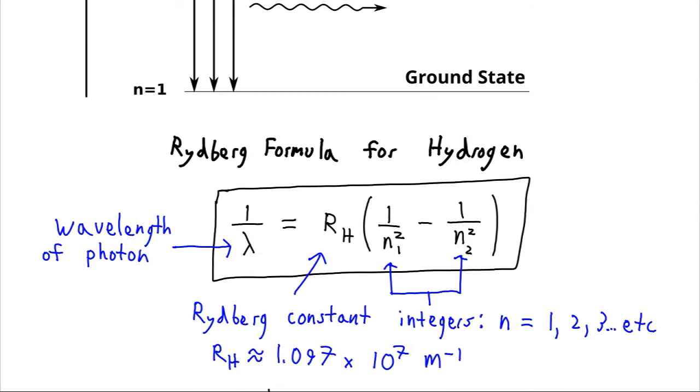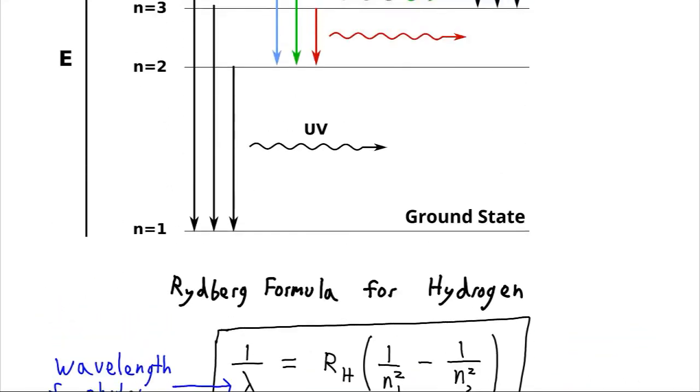And this is his formula. He says that 1 over the wavelength is going to be equal to some constant known as the Rydberg constant. This can be different for every element. In this case, we're going to use hydrogen's value of 1.097 times 10 to the 7th inverse meters